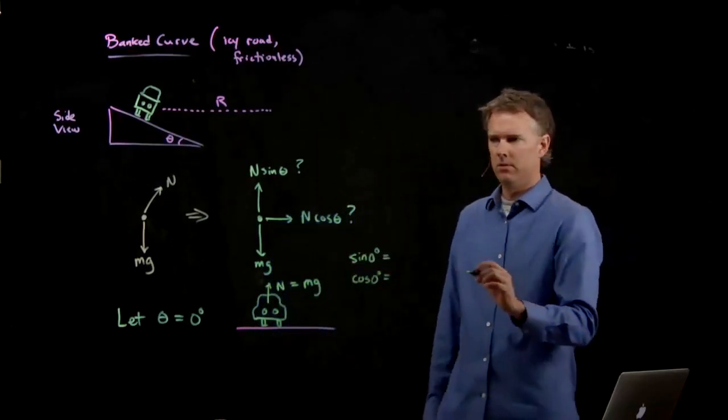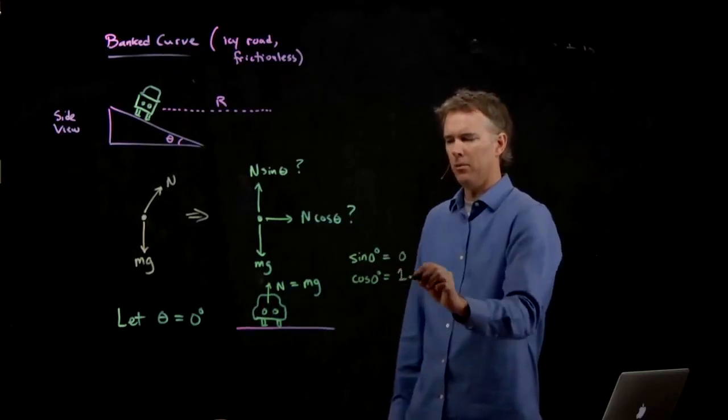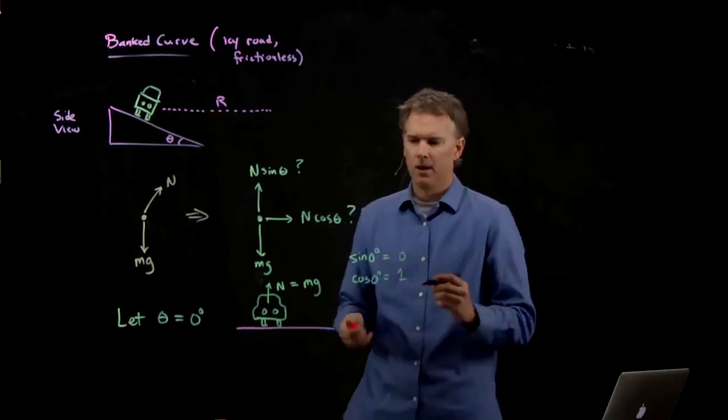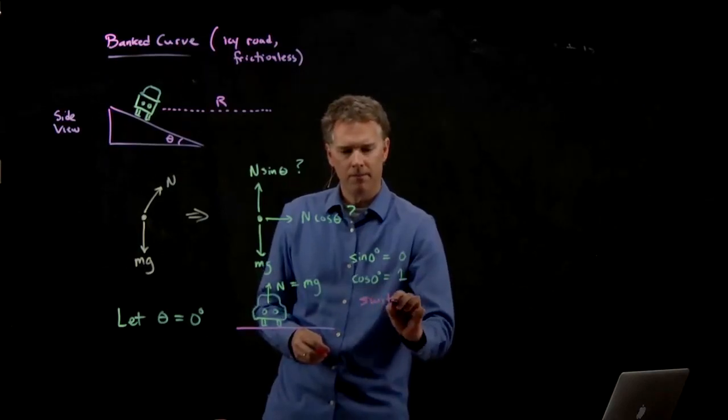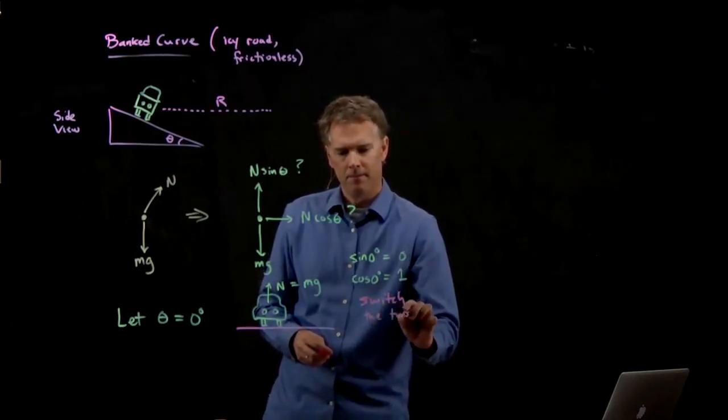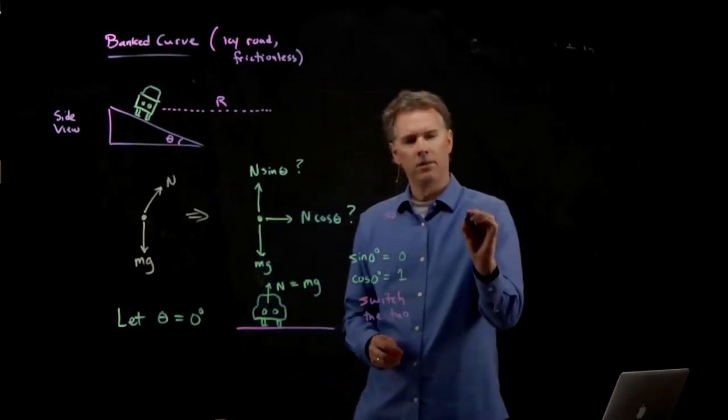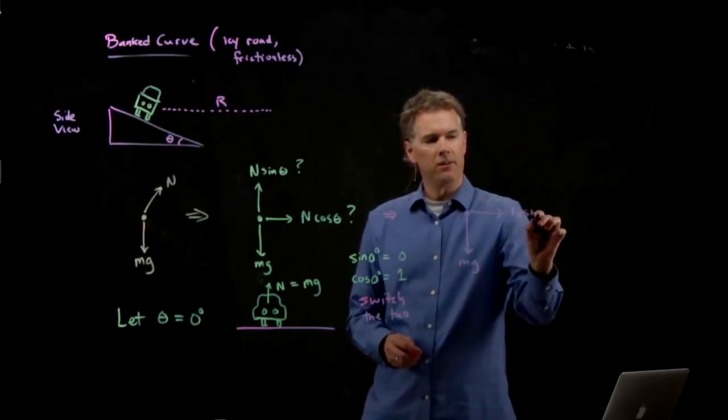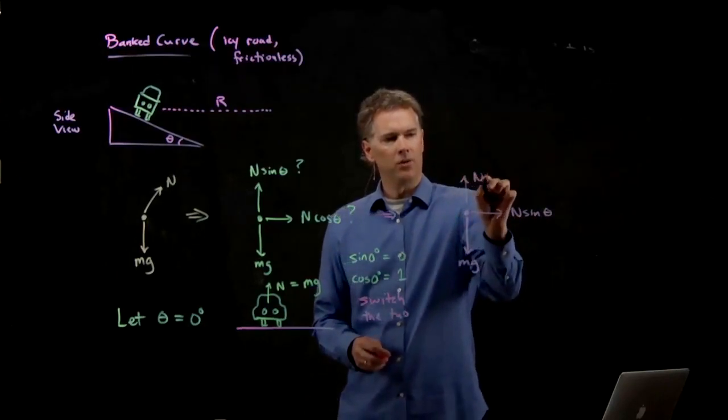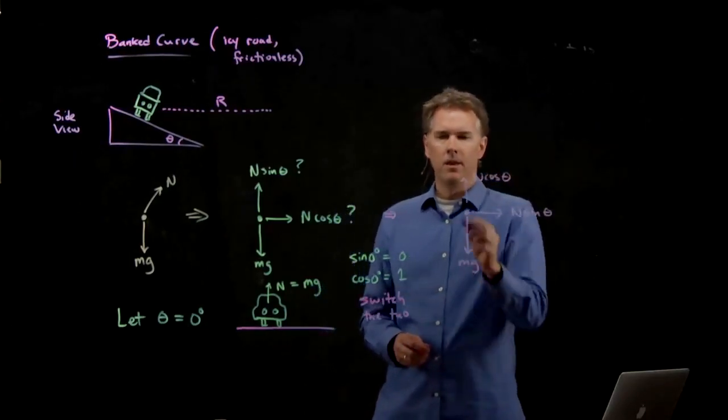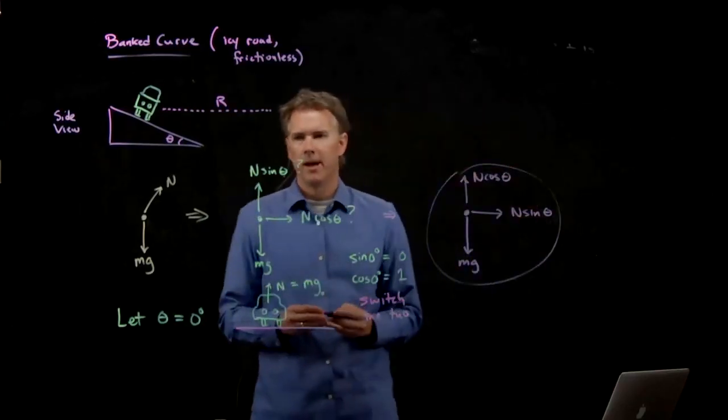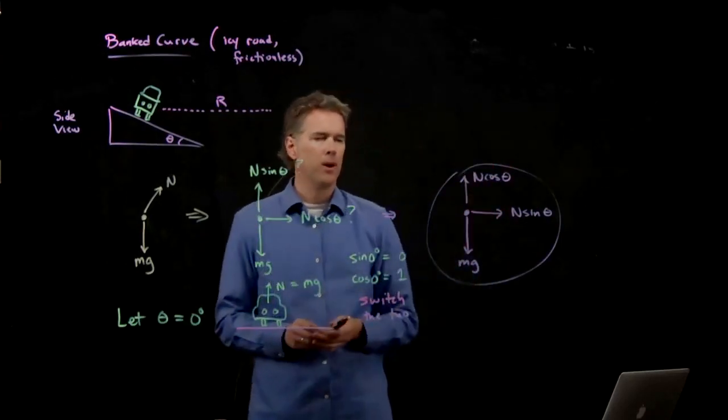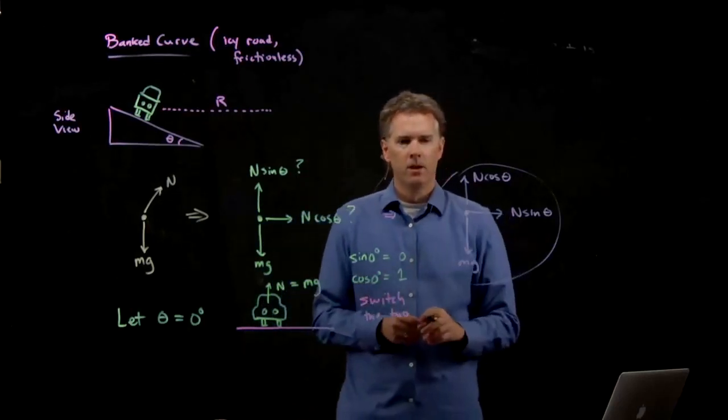So which of these is zero and which of them is one? What's sine of zero? Zero. Cosine of zero is one. So do I have this right or do I have to switch it? We have to switch. So we switch it. And so we redraw this as Mg down and sine theta to the right and cosine theta going up. This is now the correct free body diagram once you break it into components. This is actually one of the hard parts of the problem is just getting that right.